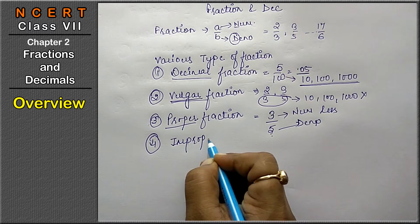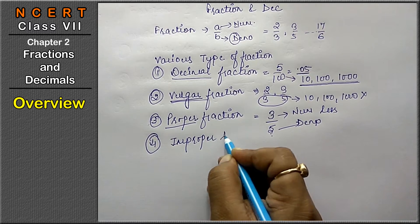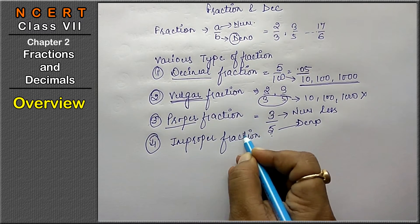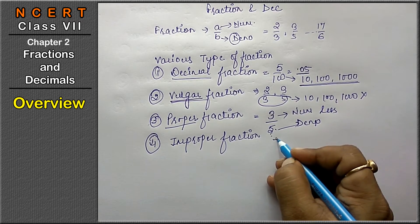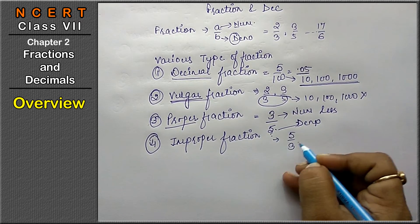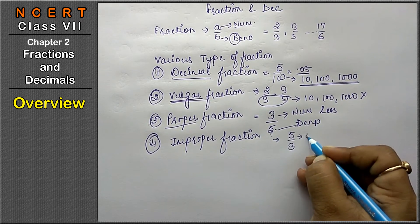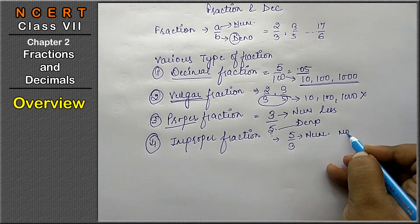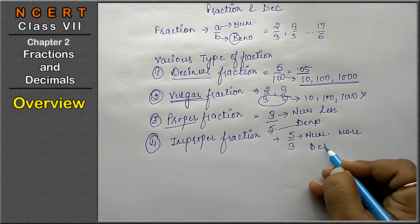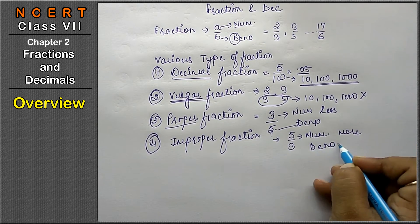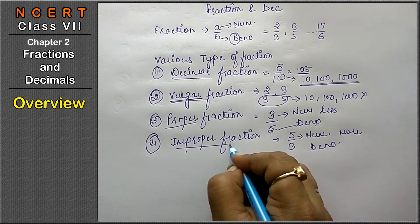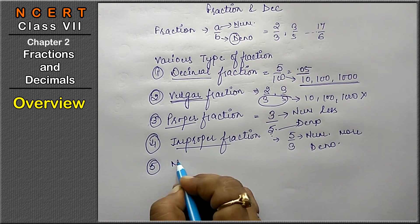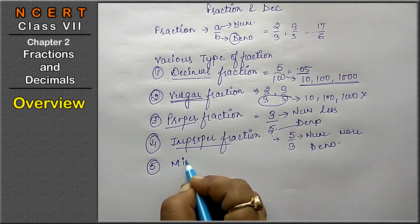The fourth type is the improper fraction. An improper fraction is the opposite of a proper fraction — like 5 upon 3 — where the numerator is more than the denominator. That is called an improper fraction.